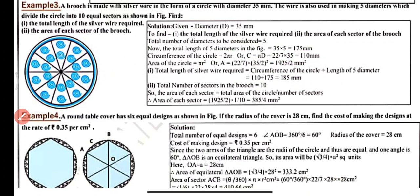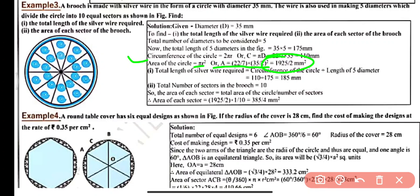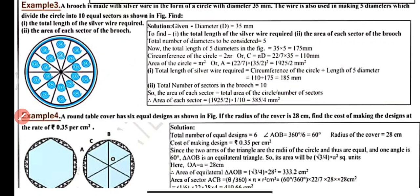Area of circle = πr² = (22/7) × (35/2)² = 1925/2 mm². Total number of sectors = 10 (since five diameters are used). Area of each sector = (1925/2) × (1/10) = 385/4 mm².